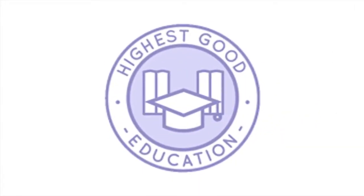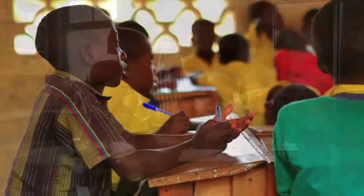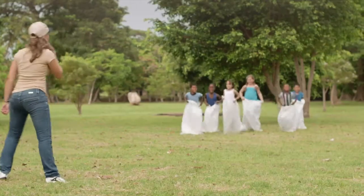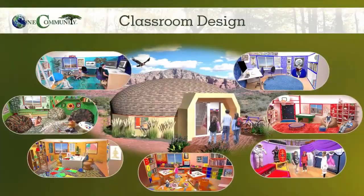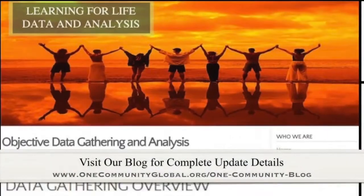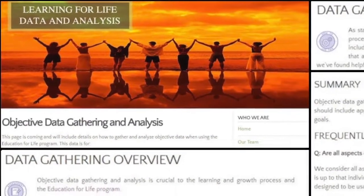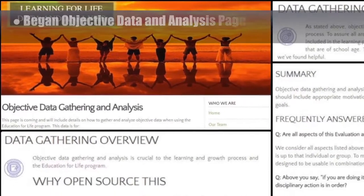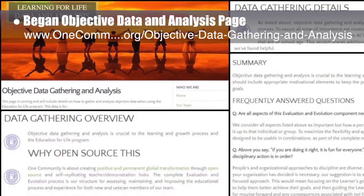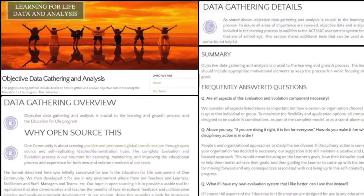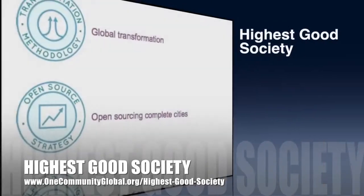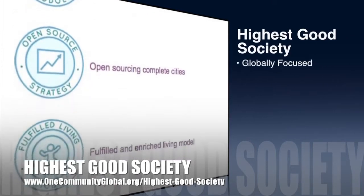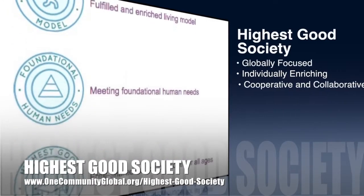One Community's approach to highest good education is designed for all age groups, adaptable to any schooling environment, inspiring and fun for all participants, and includes national standards, all subjects, lesson plans, teaching strategies, learning strategies and tools, classroom design, and more. This week the core team continued adding to the education evaluation and evolution process open source pages and tutorials — we created the formatting and began entering the content for the objective data and analysis page.